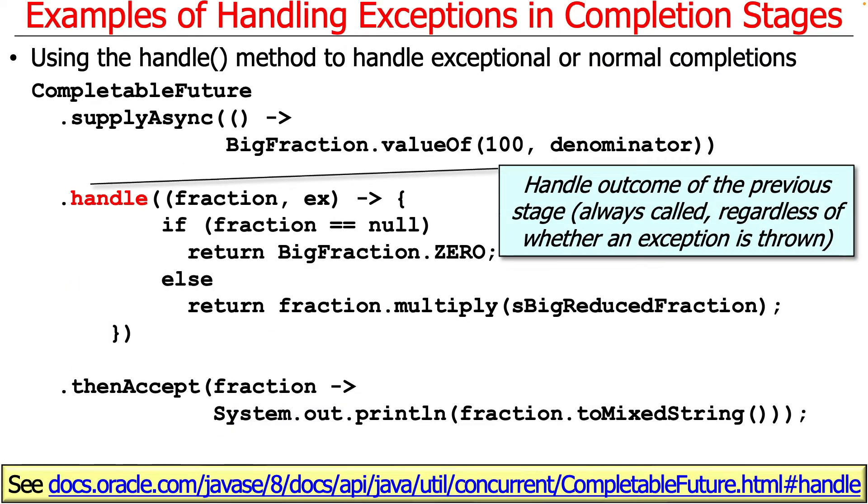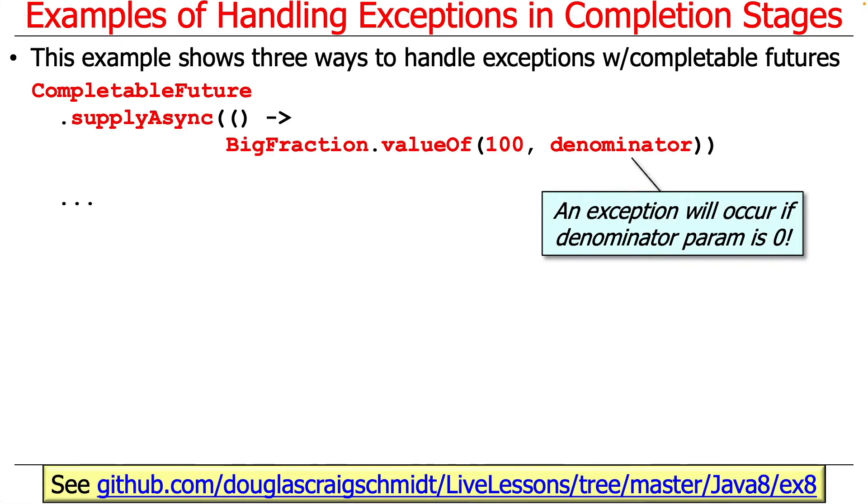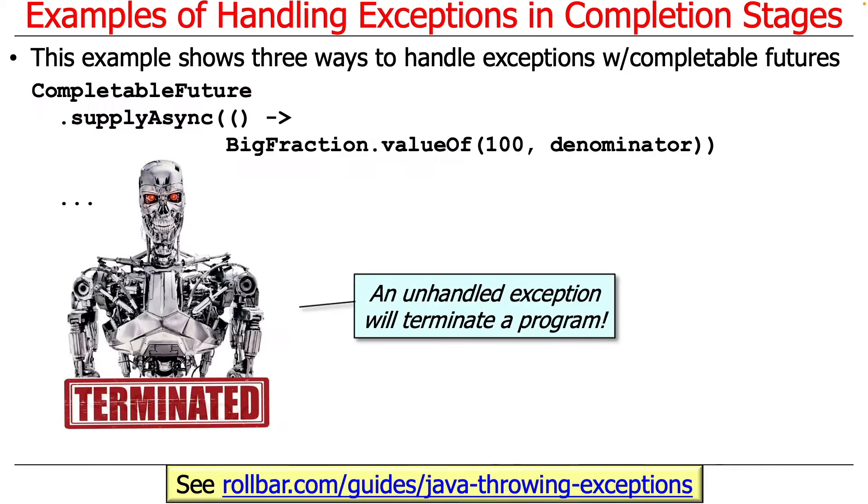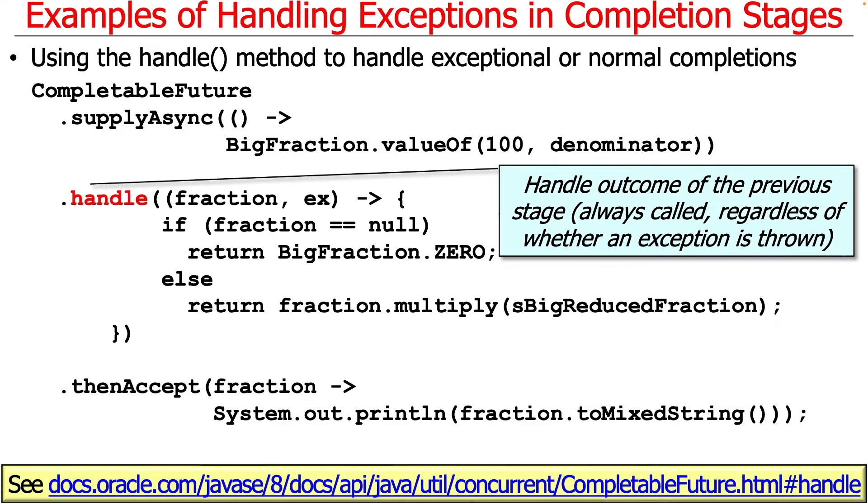We'll first start by showing how to use the handle method to handle exceptions or normal completions. This is arguably the most common exception handling method for reasons you'll see in a second. We created a completable future that when completed will either have a result or it will have an exception that was generated. The handle method will handle the outcome of the previous stage. It's always called regardless of whether an exception is thrown or not.